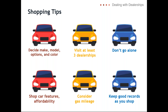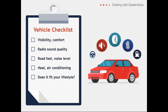Handout number two is 'Vehicle Options to Consider' — it's a checklist to help you decide what options you really want and which ones you could do without, especially if you have a specific price point. Do you want electric everything, or could you go without that? Do you need a sunroof? The vehicle checklist covers visibility and comfort, radio and sound quality, road feel, noise level, heat and air, and whether the vehicle fits your lifestyle.